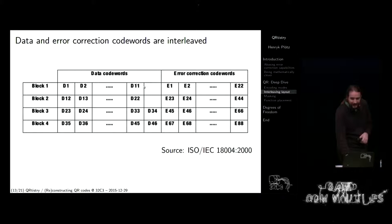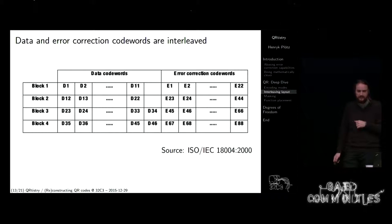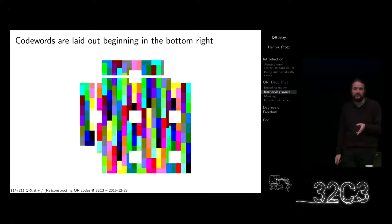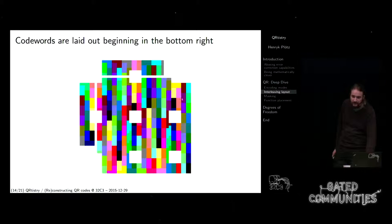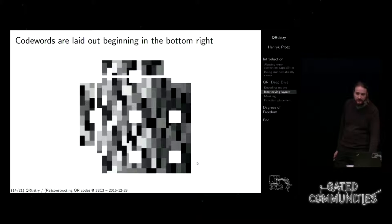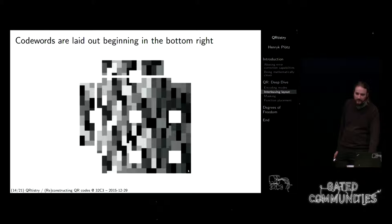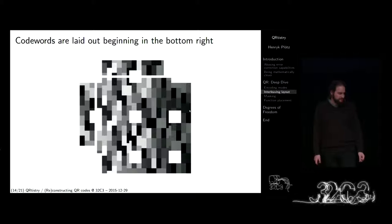Für jede dieser Zeilen ist dann die Fehlerkorrektur berechnet. Und um es dann in den Code reinzubringen, geht man spaltenweise. Wenn man die Datenblöcke auslegt, fängt man rechts unten an — hier ist der erste, der zweite, der dritte und so weiter. Hier ist ein anderer Debug-Output von meinem Programm, der einem sagt, welcher Code welcher ist — hier ist der erste, hier ist der zweite. Da gibt es diese Vermischung, vielleicht 11, 21, 31, 41, 42 und so weiter. Also hier ist die Vermischung zu sehen.